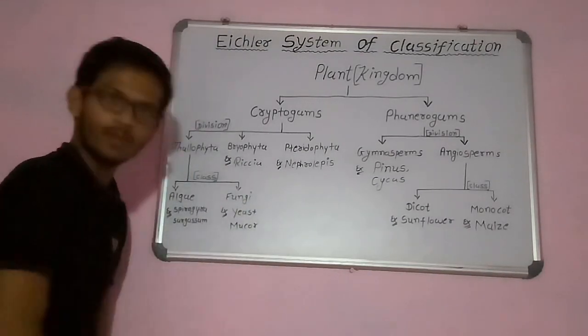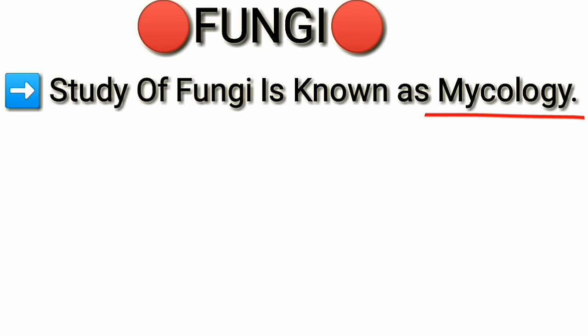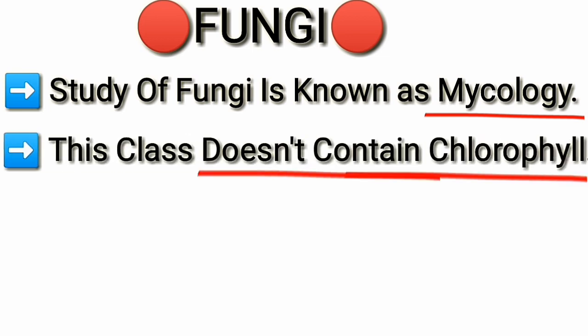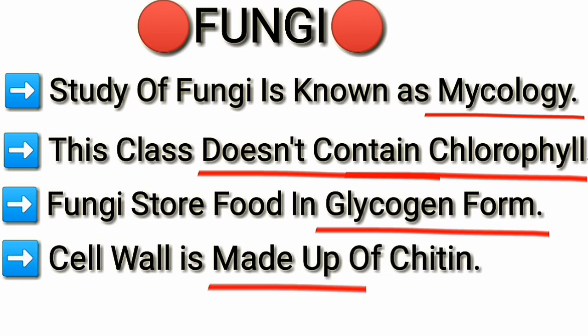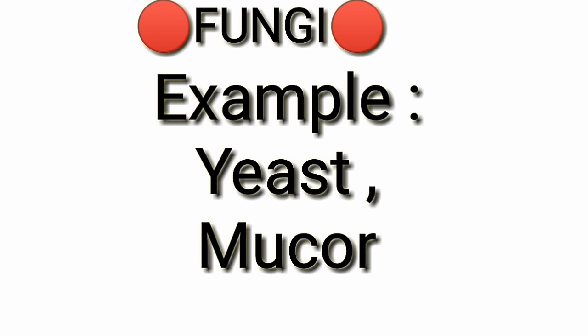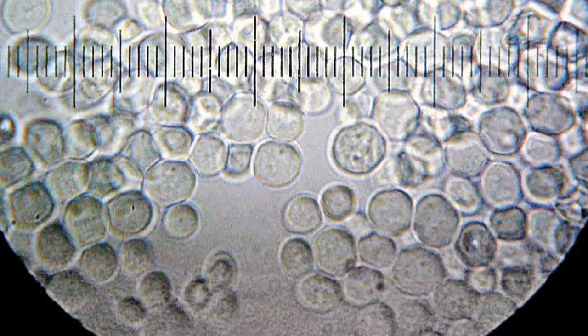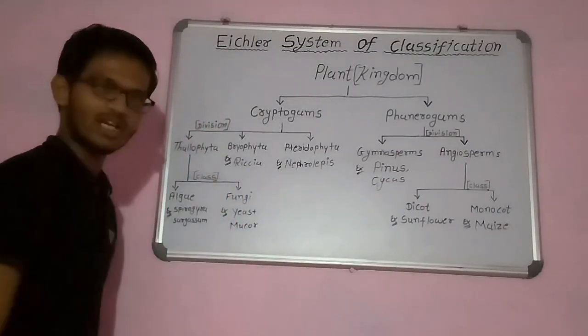The next group is fungi. The study of fungi is known as mycology. Fungi do not contain chlorophyll. Fungi store their food in glycogen form. The cell wall of fungi is made up of chitin.